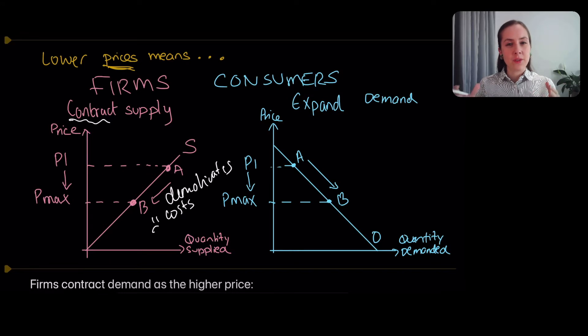At the same time, the lower price is going to cause a movement down the demand curve. It's going to cause an expansion because the consumers can better afford it. They might buy this good instead of substitutes and they might just see it more worthwhile to buy now that the price is cheaper.